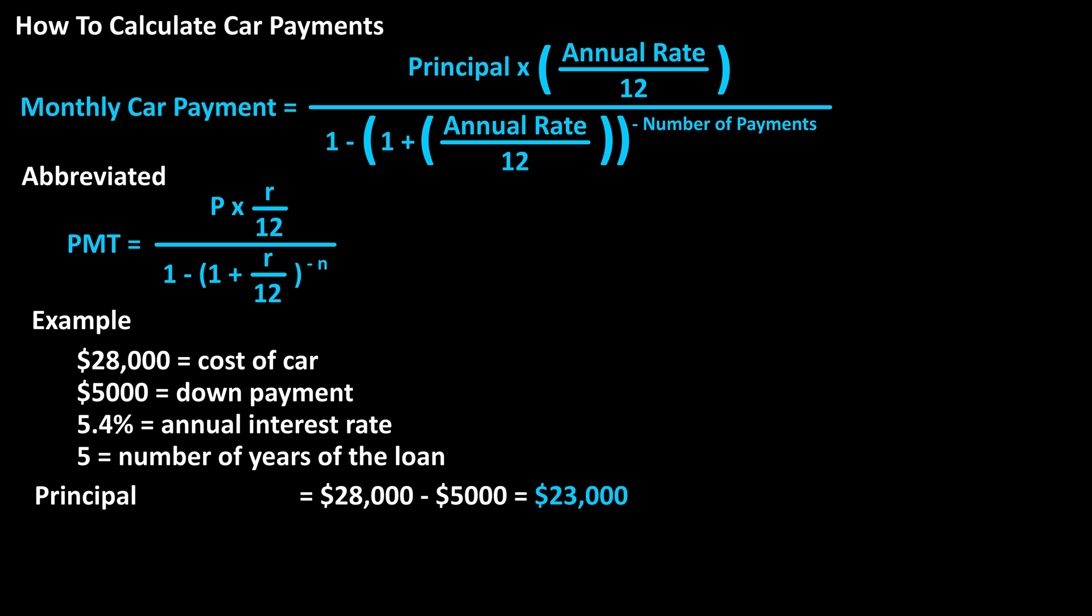So the principal of the loan is the cost of the car, $28,000, minus the down payment of $5,000, which is $23,000.